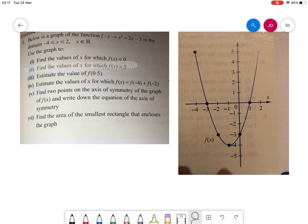What we're going to be doing is part two here: find the values of x for which f(x) equals 5. We know already that f(x) is another way of saying y.